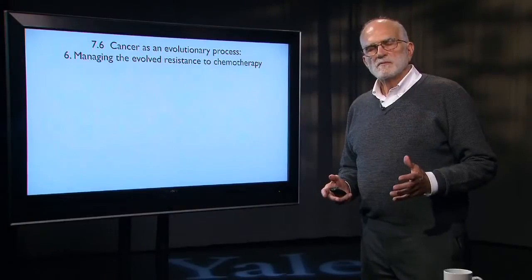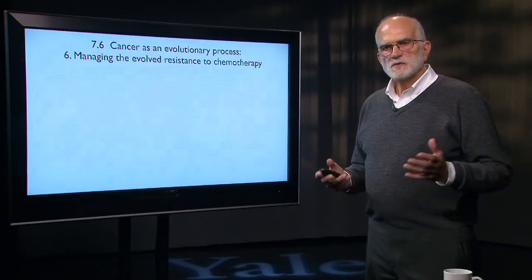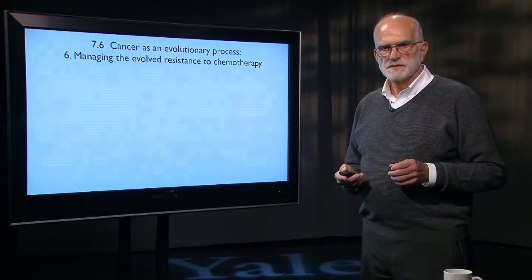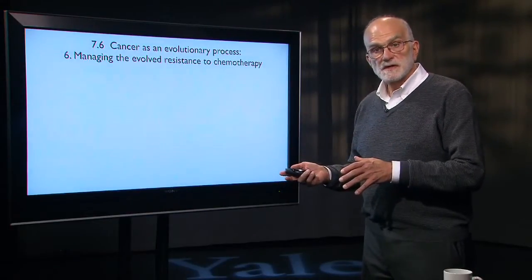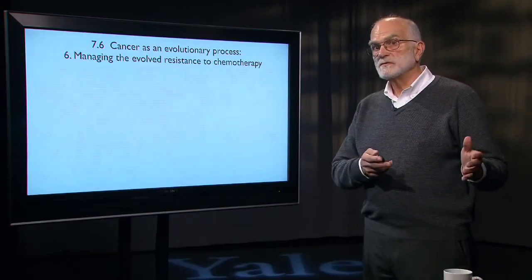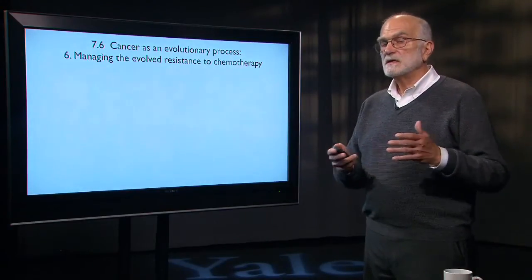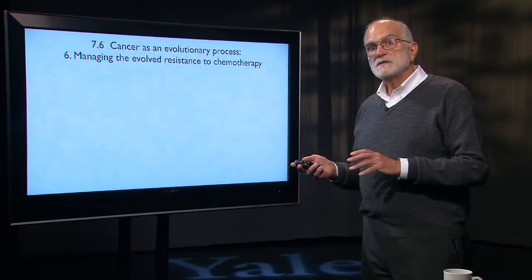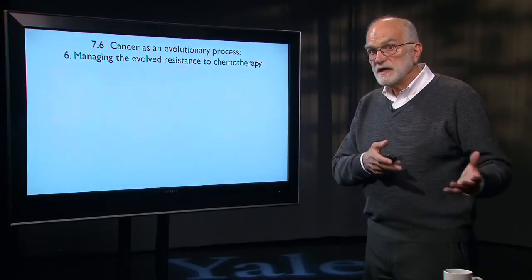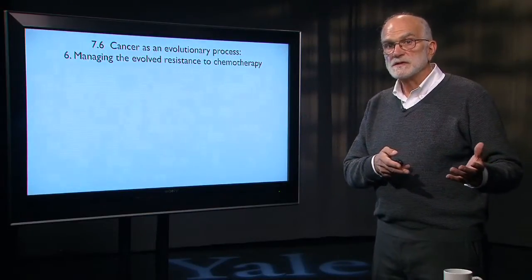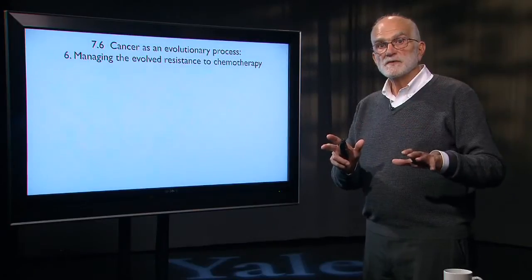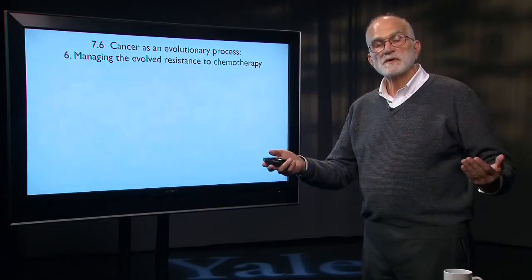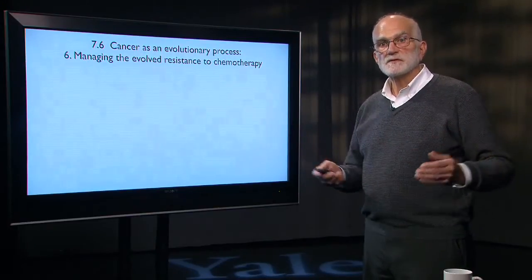When we discussed the evolution of antibiotic resistance, we saw that strong selection very rapidly produced an evolution of resistance. The same thing happens in cancer. There are lots of analogies between the evolution of resistance to antibiotics and the evolution of resistance to chemotherapy. We're going to explore that and see whether understanding cancer as an evolutionary process can help us slow down resistance evolution and thereby extend the period of health and life for cancer patients.